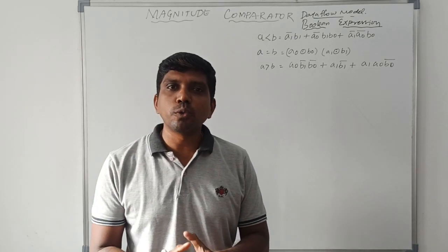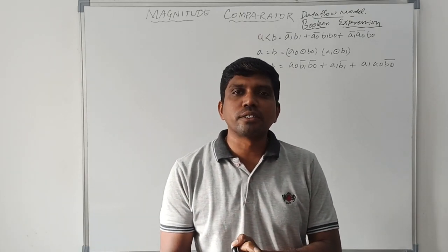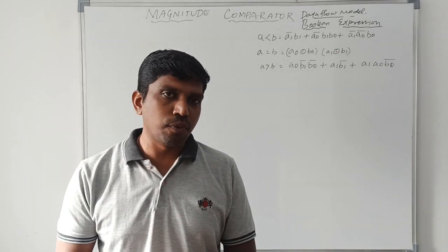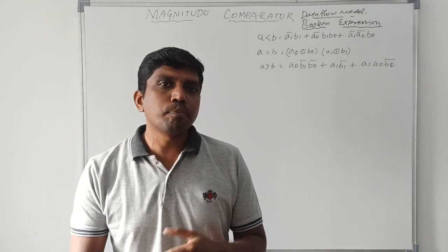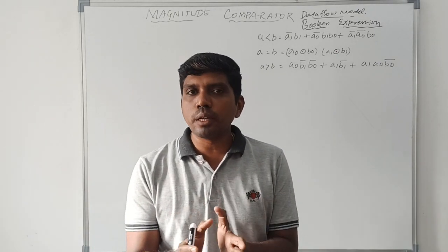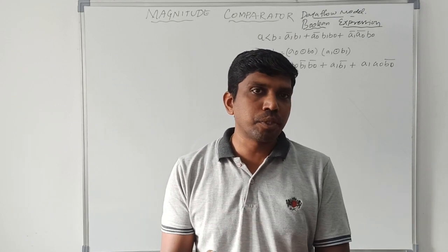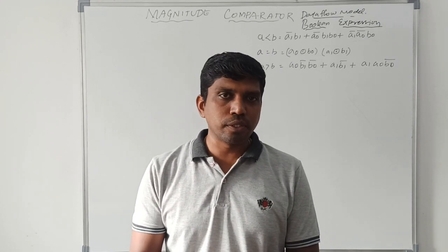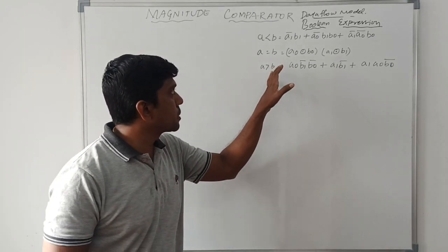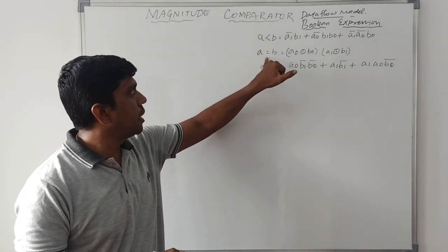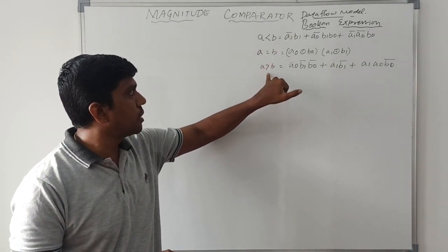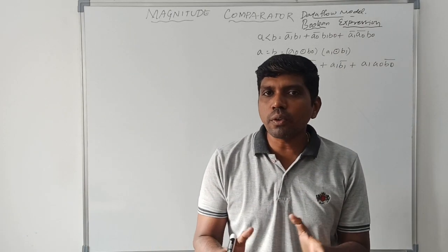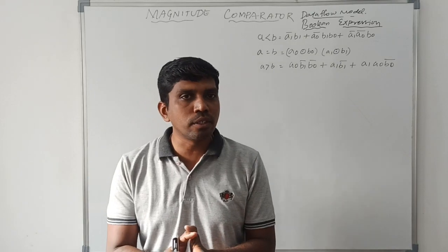In today's class I am going to discuss how to write the Verilog HDL code for a 2-bit magnitude comparator using the data flow model. In the previous video we discussed the truth table for the comparator, Karnaugh map simplification, and found the Boolean expressions for A less than B, A equal to B, and A greater than B. If you need it, kindly refer to that video.